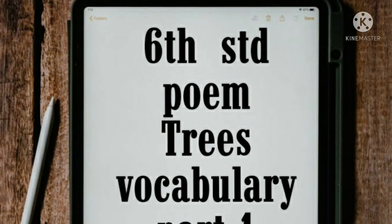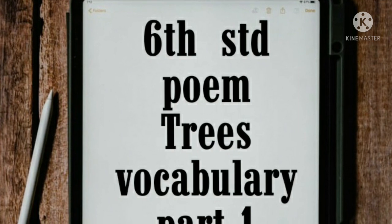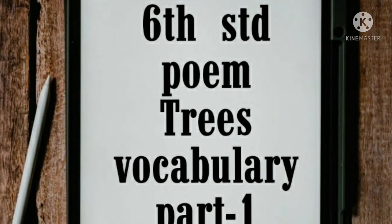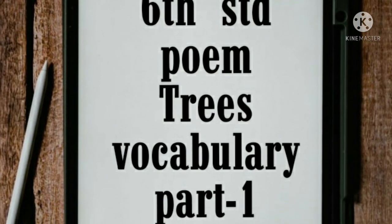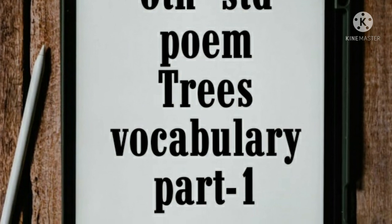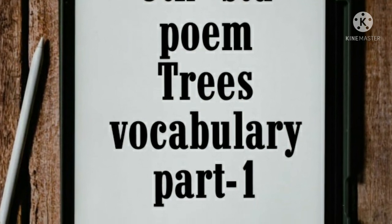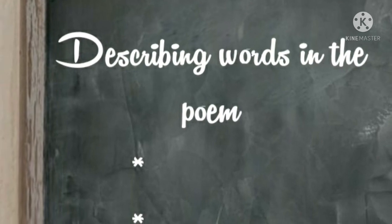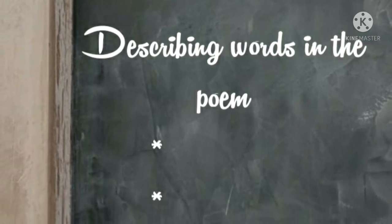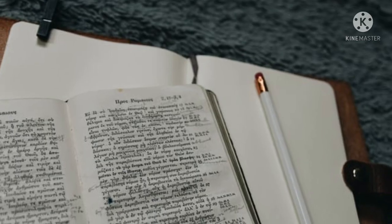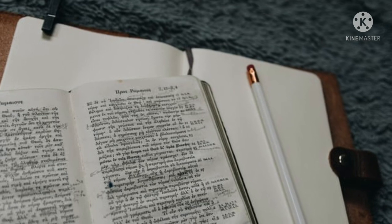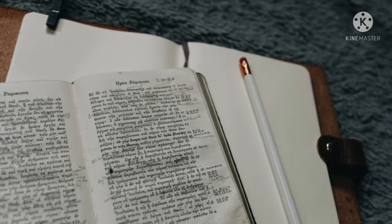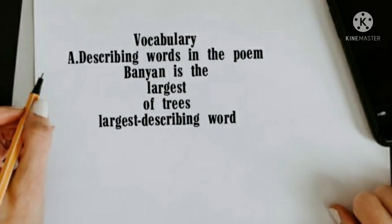Good morning dear children. Today we are going to learn about the vocabulary of sixth standard English poem 'Tree' from Samacheer Kalvi. First, let's find the describing words in the poem. Students, take the Samacheer Kalvi first term sixth standard English book with a pencil. Turn to page number 126, vocabulary section A: find the describing words given in the poem.